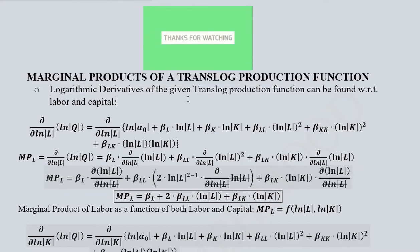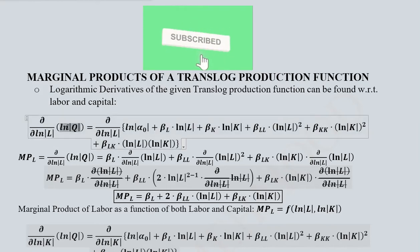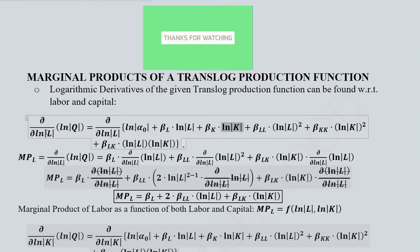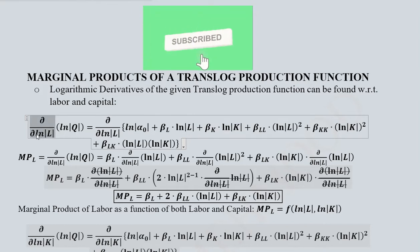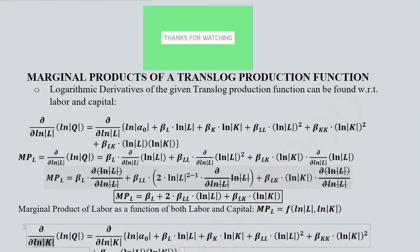The reason is that the dependent and independent variables are appearing in the form of their logarithms — natural log of Q, natural log of labour, and natural log of capital. So we take the logarithmic derivative, and here in the denominator it is delta of natural log of labour, and again in the denominator it will be delta of natural log of capital.